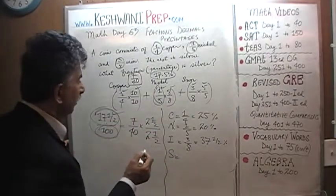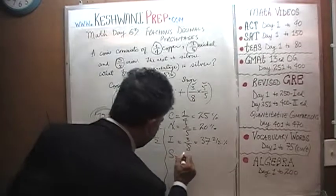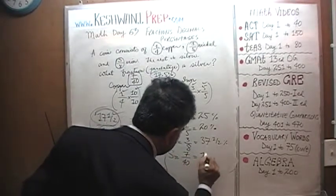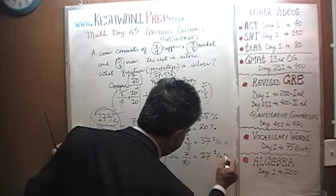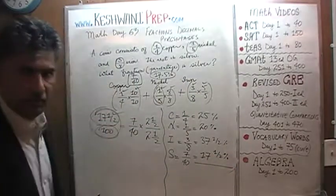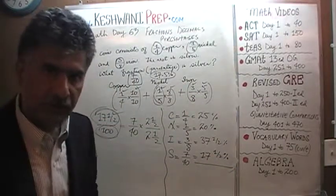Silver, which we found out to be 7 over 40, which we are claiming to be 17.5%. Let's see what they add up, shall we? Let's hope and pray to God that they add up to 100.